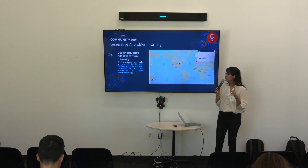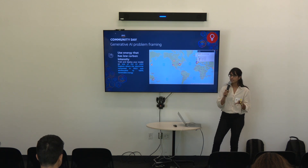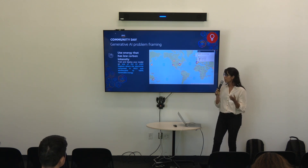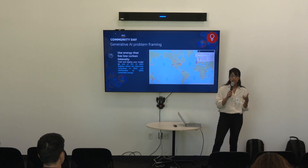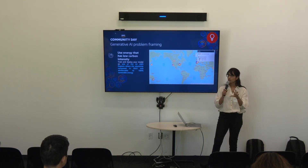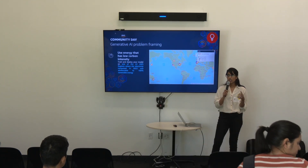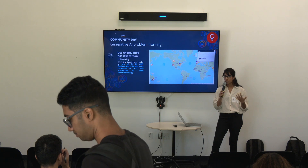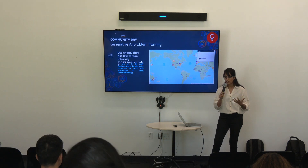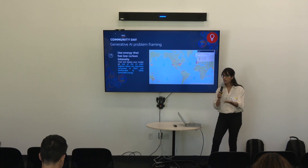The second step in problem framing is choosing the right region to deploy to. On AWS, you can deploy to one of the 22 regions attributable to 100% renewable energy, which have lower carbon intensity. That way, whatever sustainability optimizations AWS is doing on their data centers and infrastructure, you're going to inherit them just by deploying your infrastructure in that region.